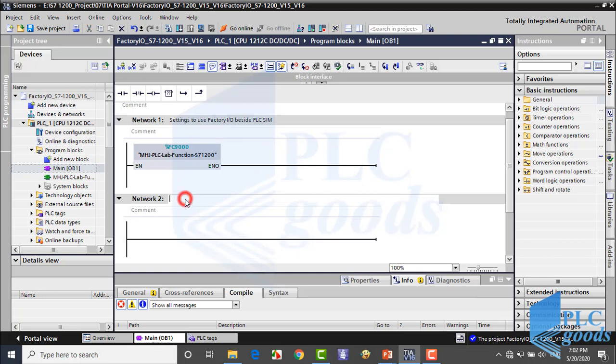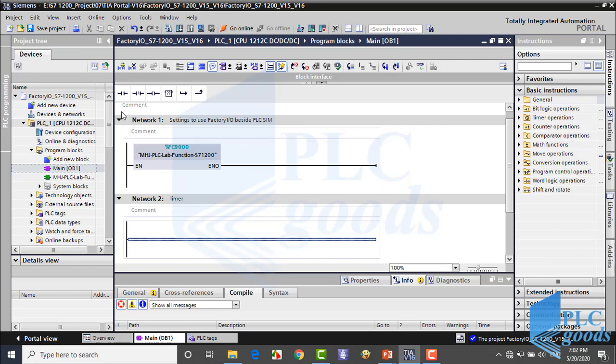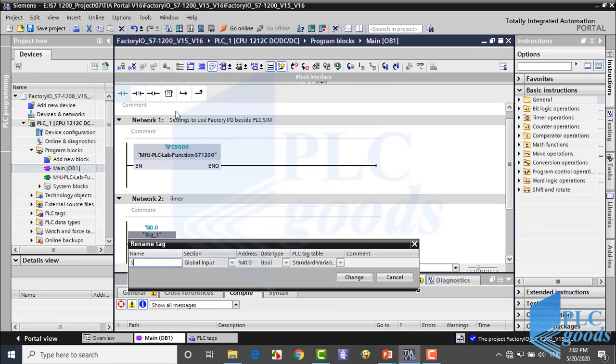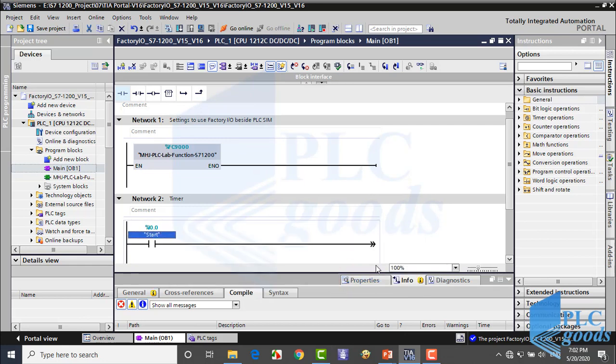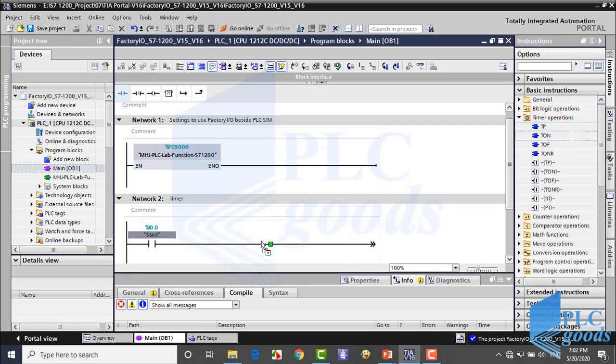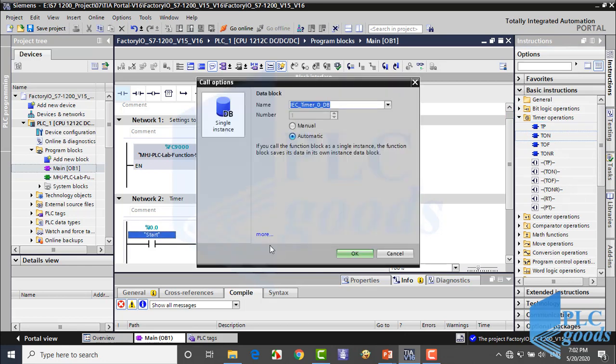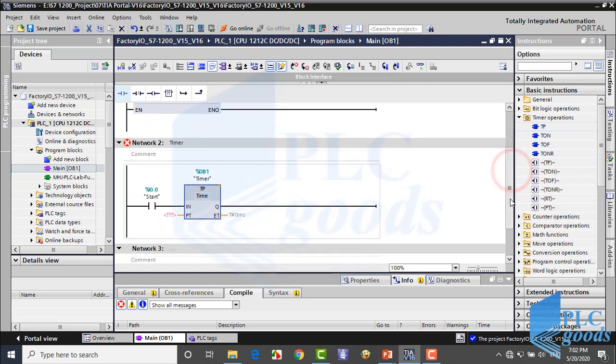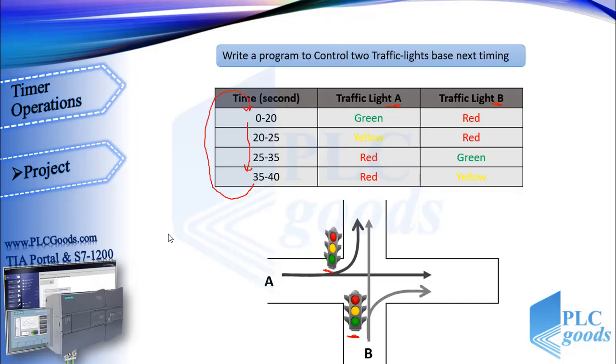Let's start programming. There are several ways to write the desired program. For example, it can be written with some pulse timers, but here I'm going to use only one pulse timer. But I will need to use comparator instructions. First, I insert a start contact. Then I need a pulse timer.